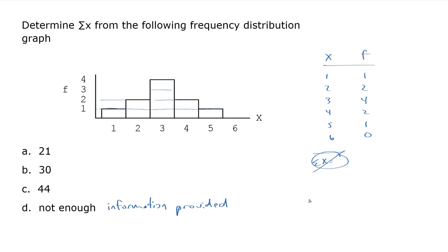Now, to get the sum of x when you've got a frequency distribution like this, you actually have to do the sum of f times x. So I'm going to do f times x, and I'll get 1 times 1 is 1, 2 times 2 is 4, and so on.